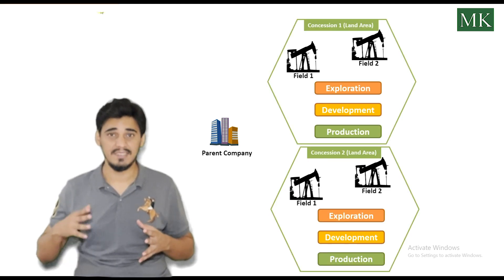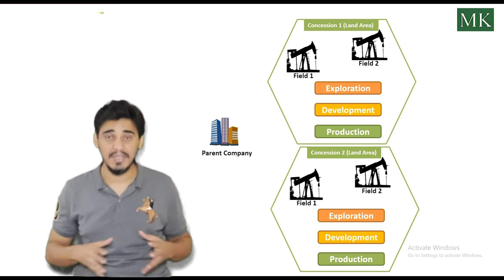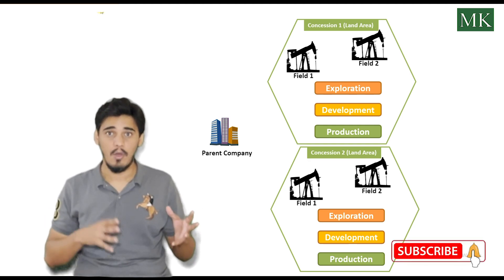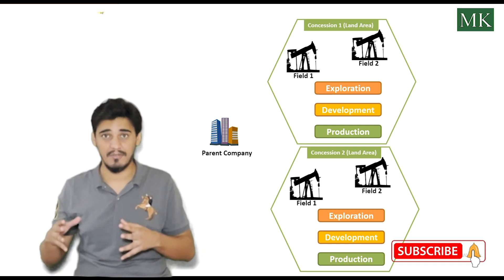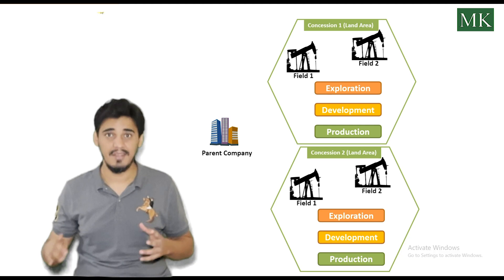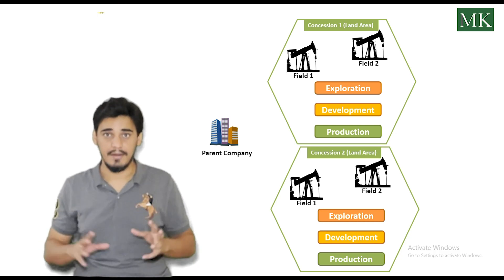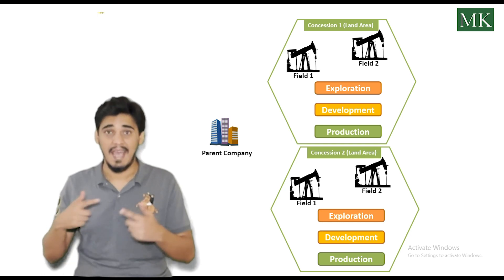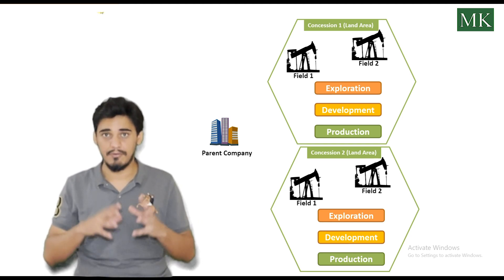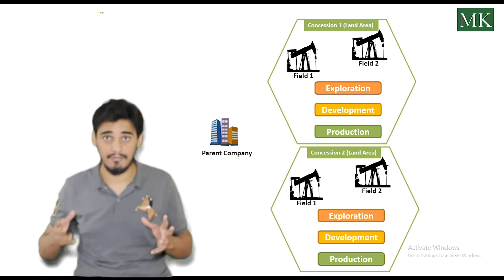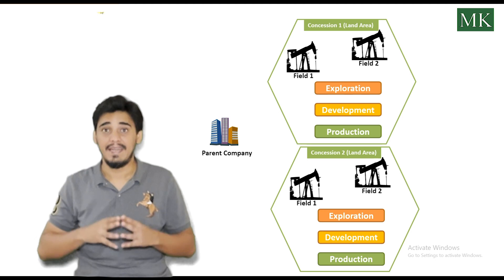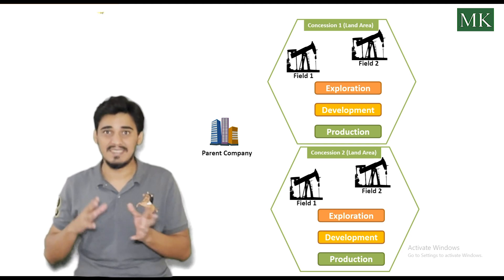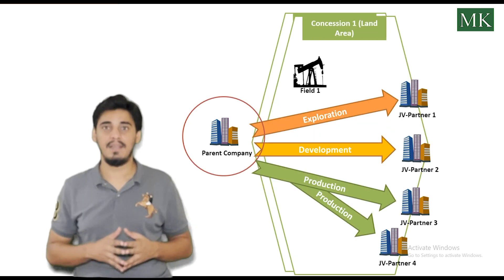The concession, which is the area of land, is allotted to the parent company working on the upstream side for exploration. This exploration and production work is divided into three major phases: first, exploration, in which the first well is drilled; second, development, in which the field is developed for continuous extraction after successful exploration; and third, production, which is the continuous extraction of crude oil and gas for commercial purposes.